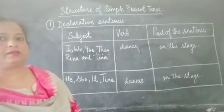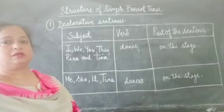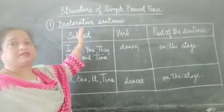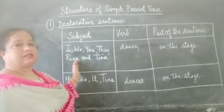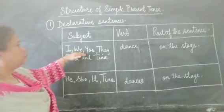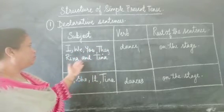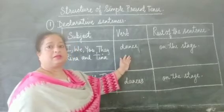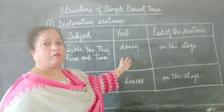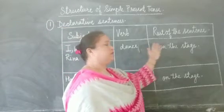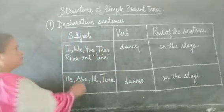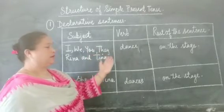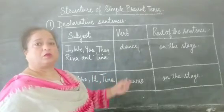Now let me explain the structure of simple present tense in declarative sentences. When the subject is I, we, you, they, or two names together like Rina and Tina, the verb does not have an S — we use only the base form (V1) of the verb. For example: 'I dance on the stage,' 'We dance on the stage,' 'You dance on the stage,' 'They dance on the stage,' 'Rina and Tina dance on the stage.'